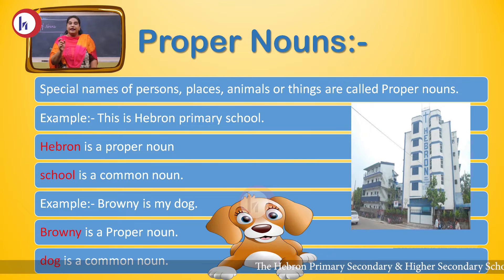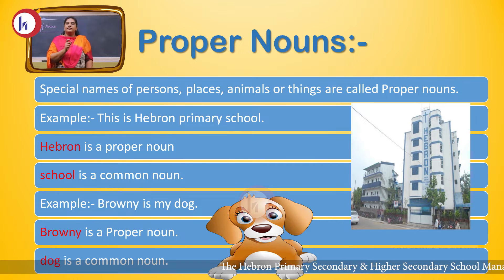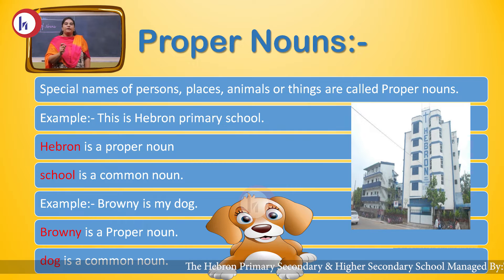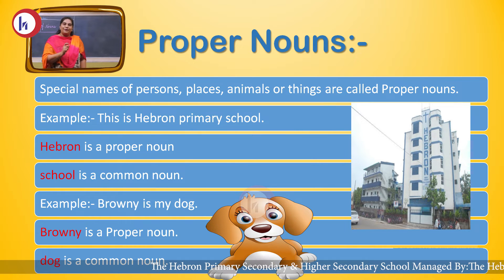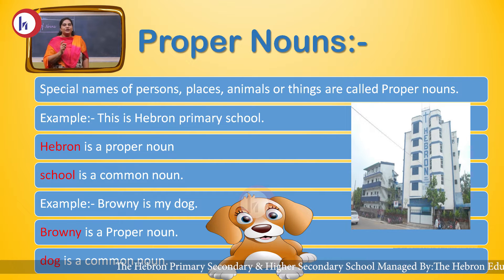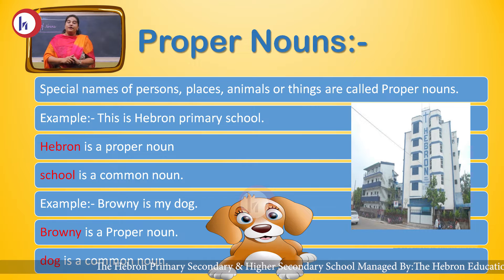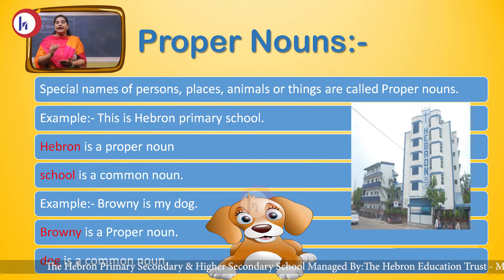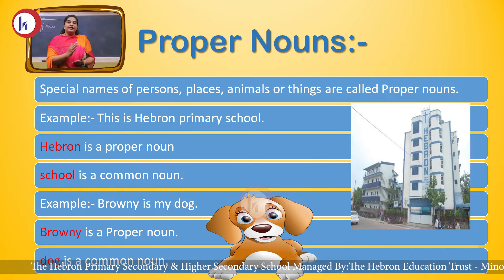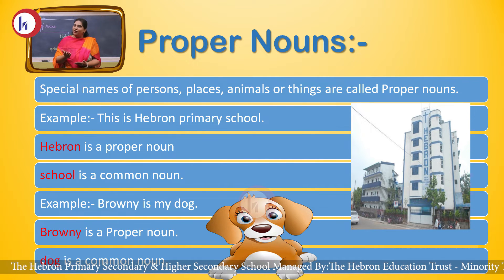In proper noun, let's take some examples. She is a teacher; her name is Radha. In this sentence, 'Radha' is a proper noun and 'teacher' is a common noun. Second example: this is Hebron Primary School. In this sentence, 'Hebron' is a proper noun and 'school' is a common noun. India is my country — 'India' is a proper noun and 'country' is a common noun. Ganga is the biggest river — 'Ganga' is a proper noun and 'river' is a common noun.